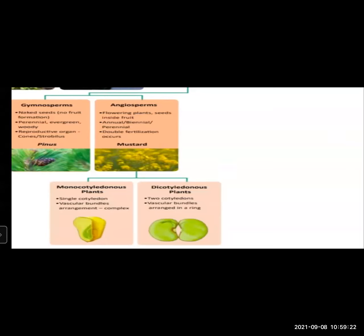The other division is angiosperm. Angiosperms are the flowering plants. Seed is inside the fruit — that is the basic difference between gymnosperm and angiosperm: gymnosperm has naked seeds, and in angiosperm the seed is inside the fruit. The plants of these groups may be annual, biennial, or perennial. In these plants, double fertilization occurs. Example: mustard. All the main bigger flowering plants are included in angiosperm.